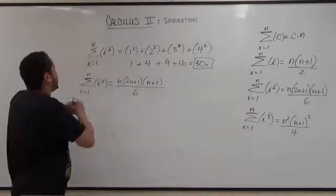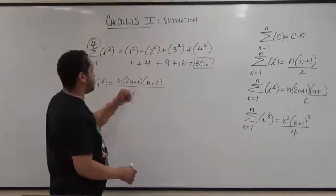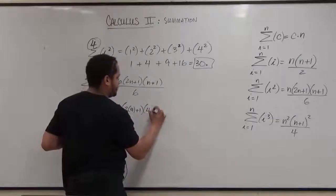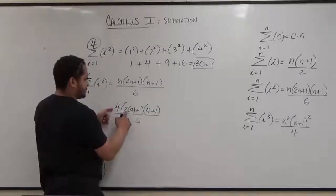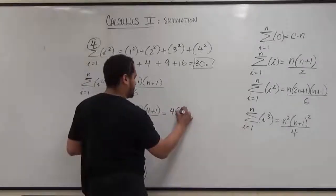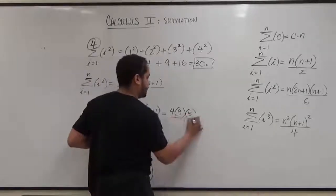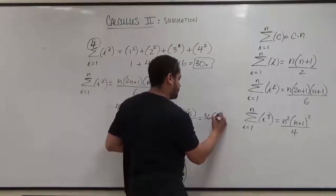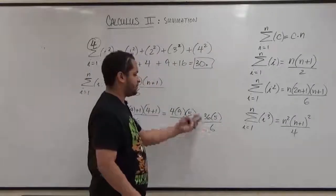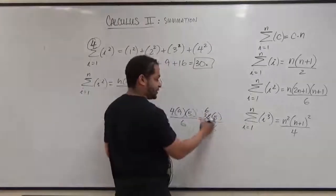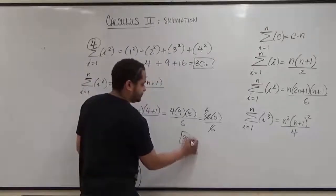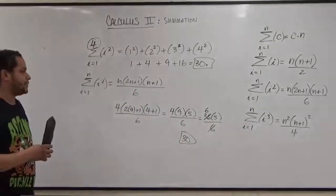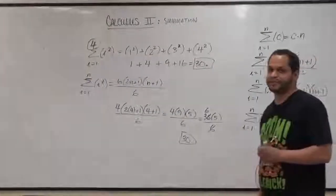Here's the formula with n=4: we substitute to get 4 times (2 times 4 plus 1) times (4 plus 1) over 6, which becomes 4 times 9 times 5 divided by 6. Then 4 times 9 is 36, and 36 divided by 6 is a perfect division: we're left with 6 times 5, which is also 30. We see the summation formula is valid. The same would work for the i cubed term — you can test that one out yourself at home. Thank you for watching.